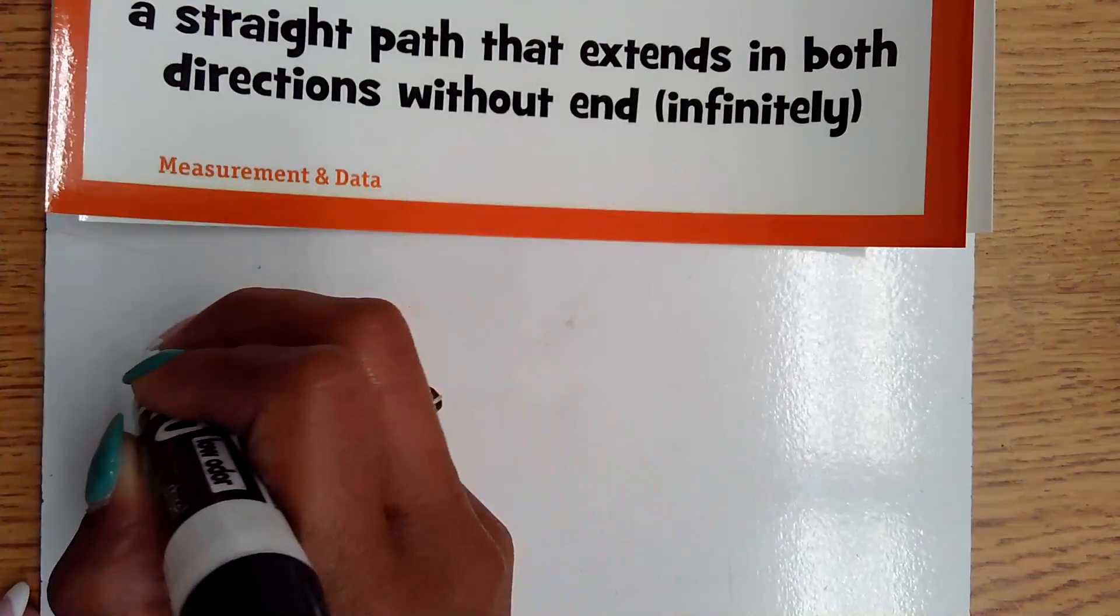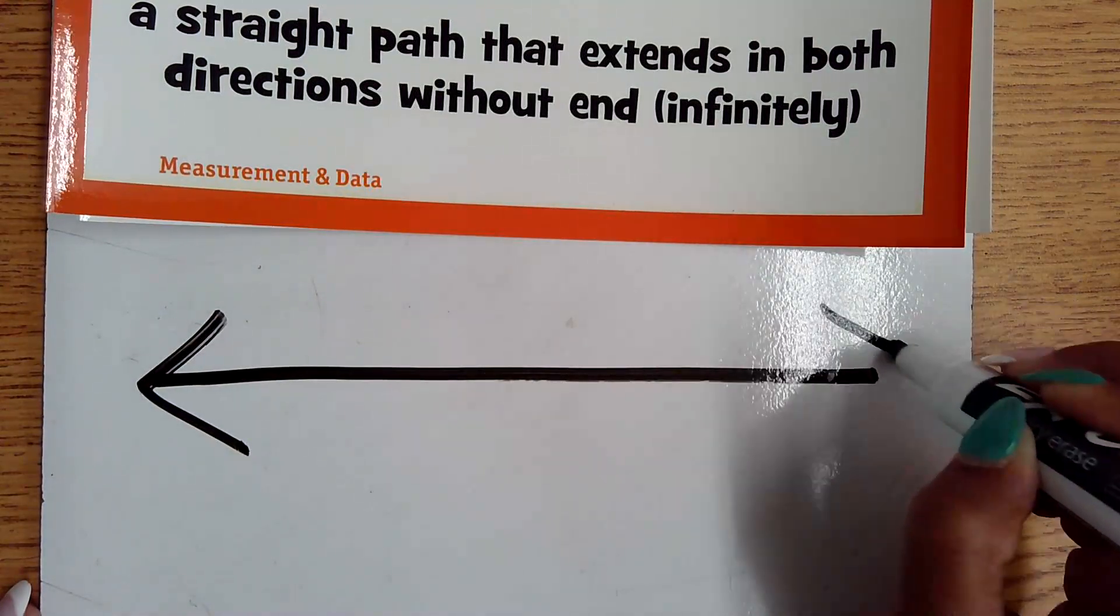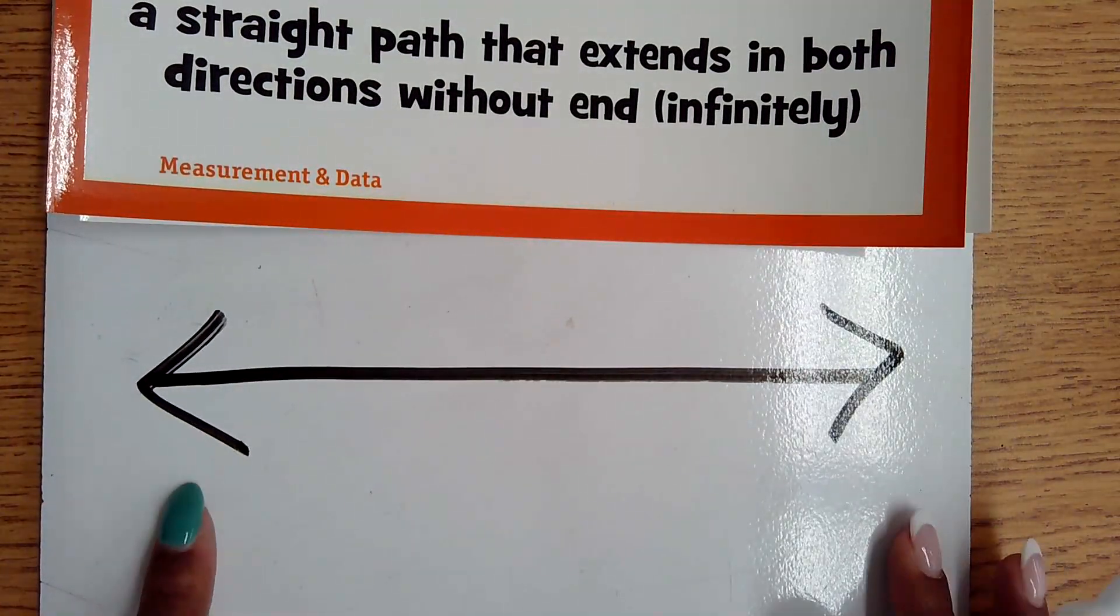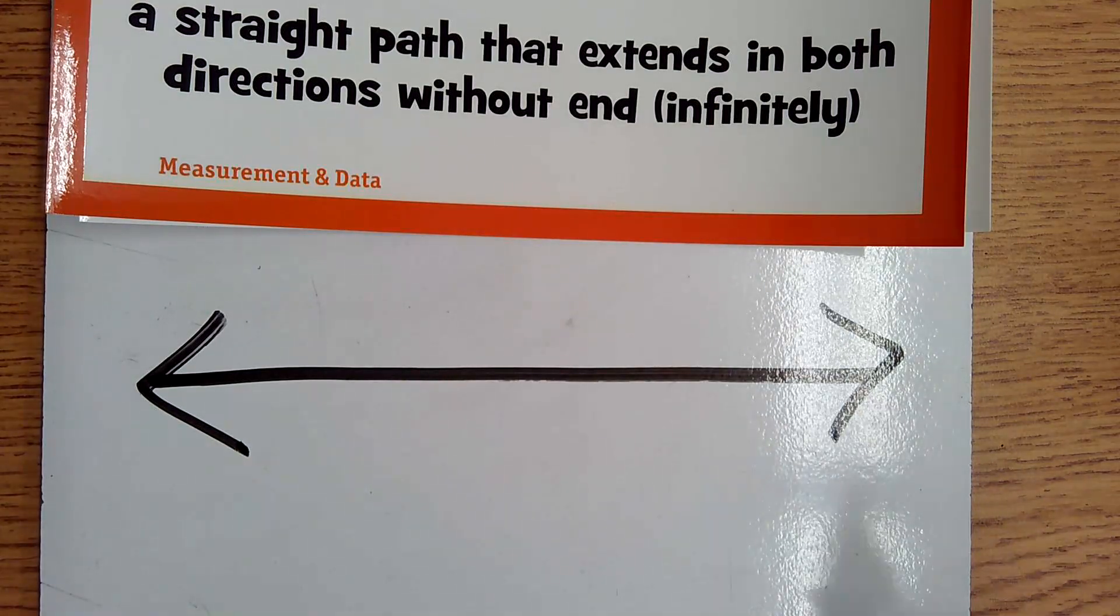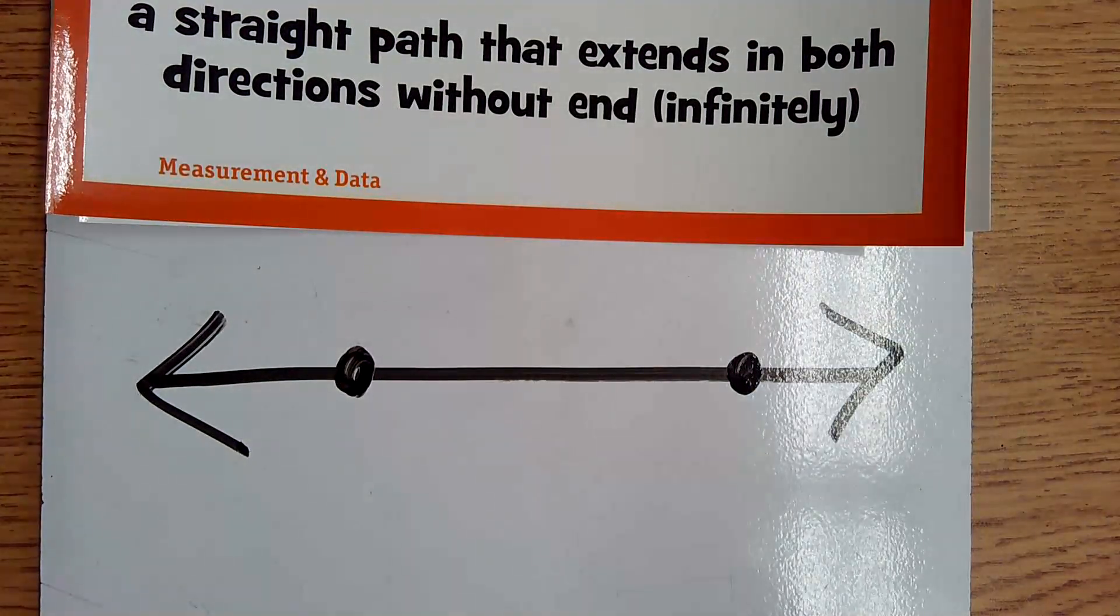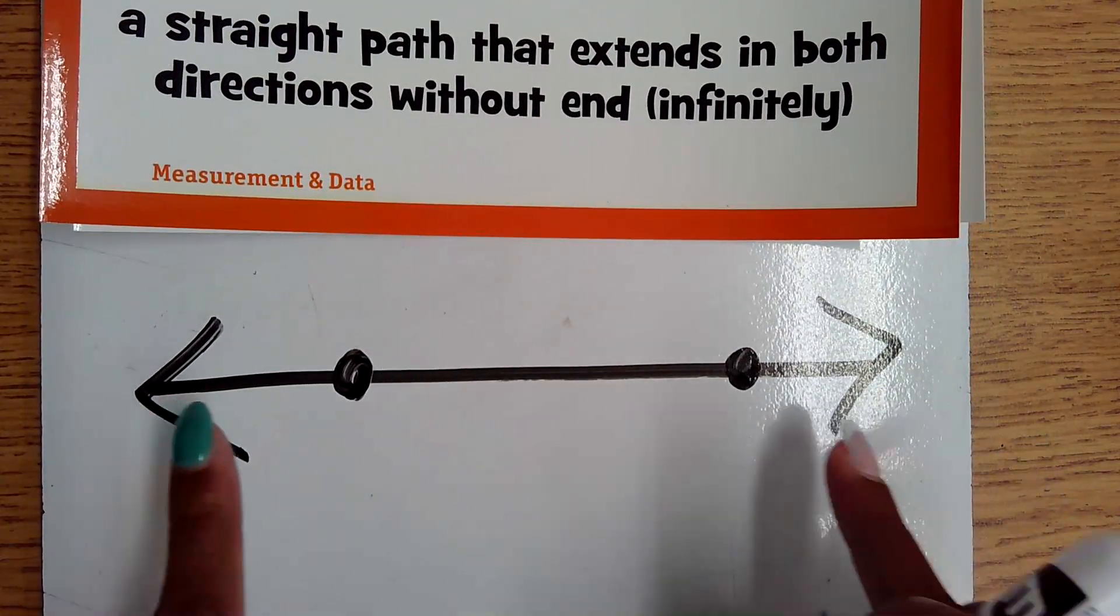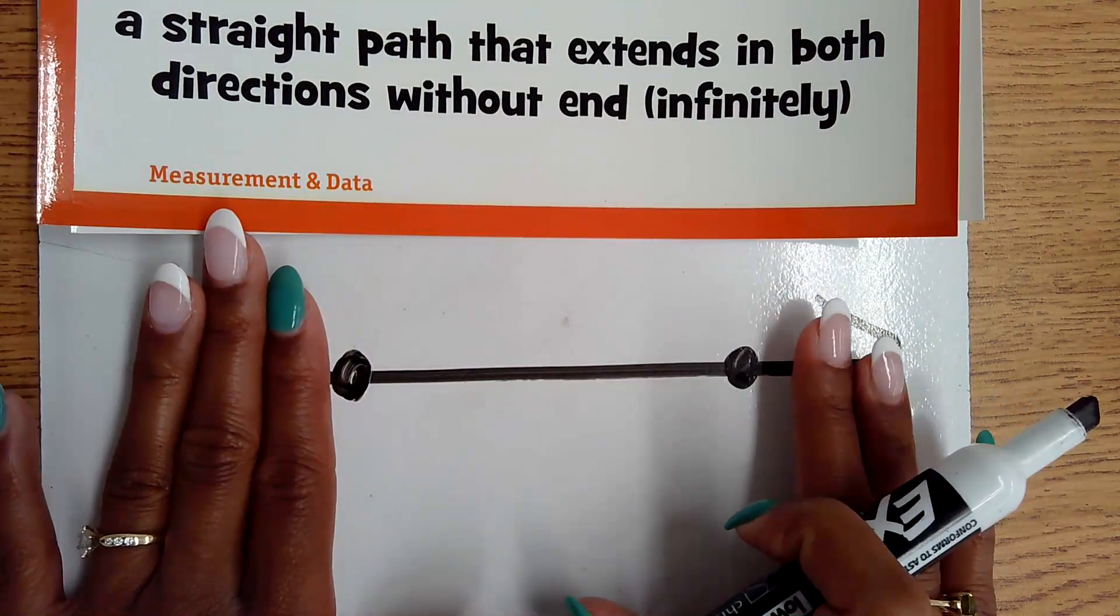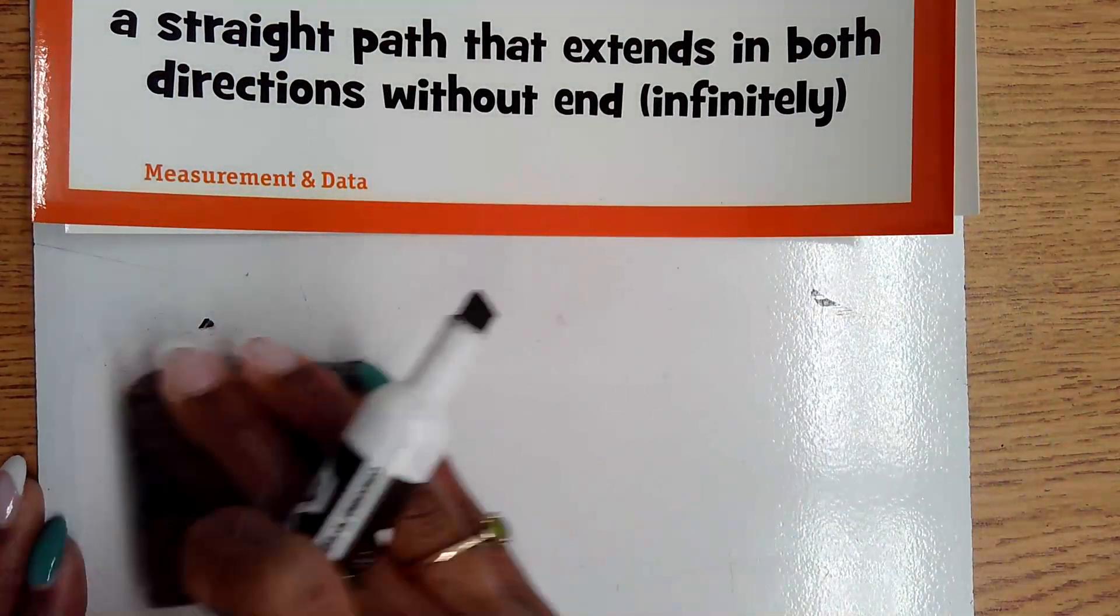What you're going to notice that's different about this specific line versus the line segment, the end instead of points, there are arrows. So both sides of the line goes on forever. Even if I have points in between, that's not the end. It's going to continue going. We could call this the line segment, but the actual line itself is going to go on forever and ever.